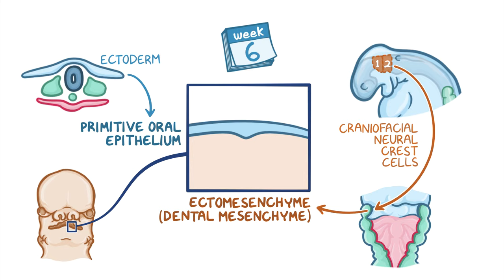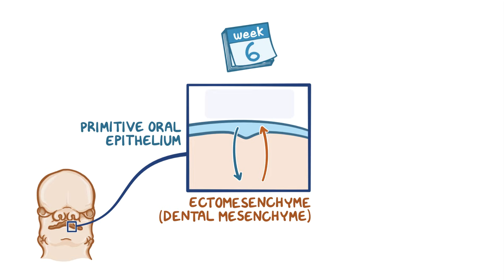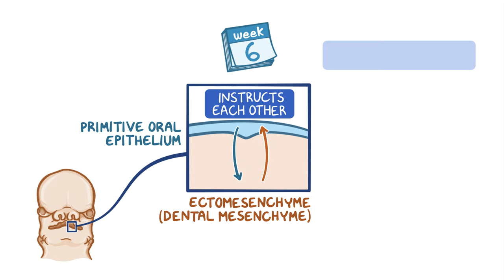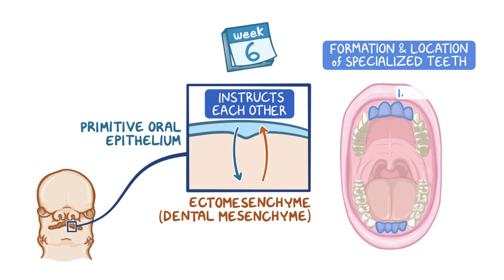The oral epithelium and the dental mesenchyme instruct each other in a sequential and reciprocal way to precisely determine the formation and location of highly specialized teeth such as incisors, canines, premolars, and molars.